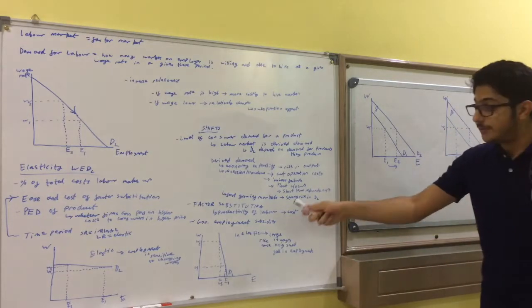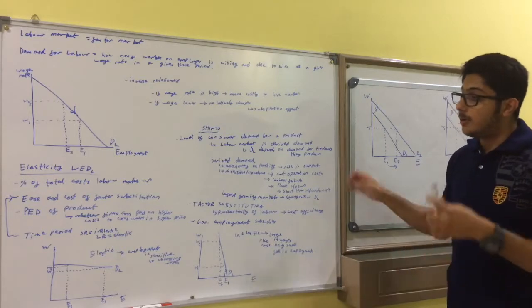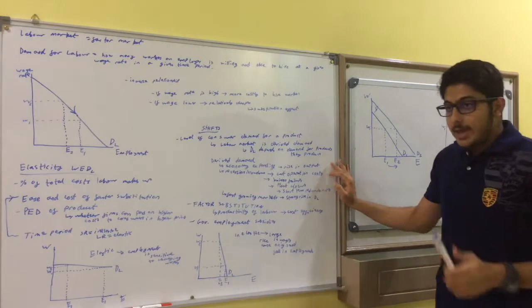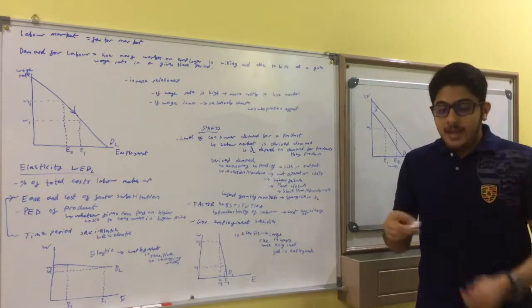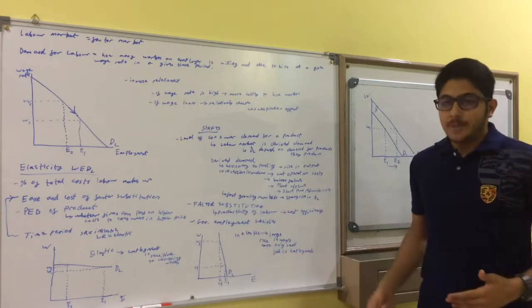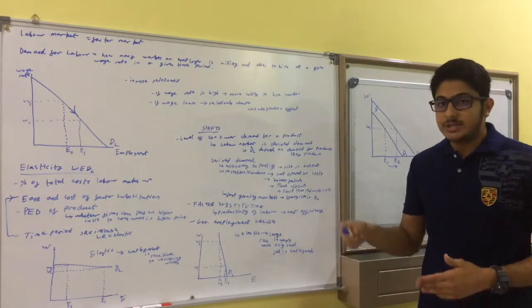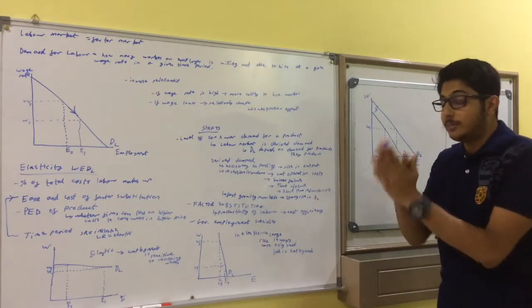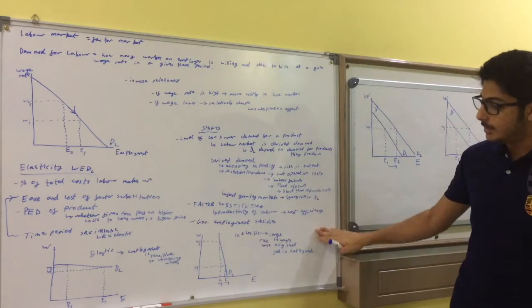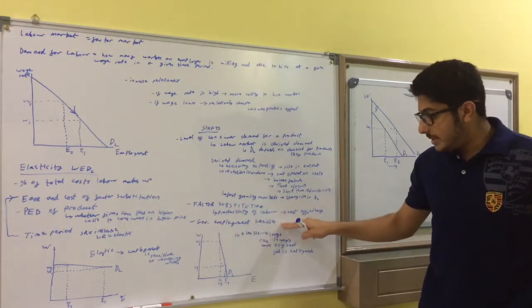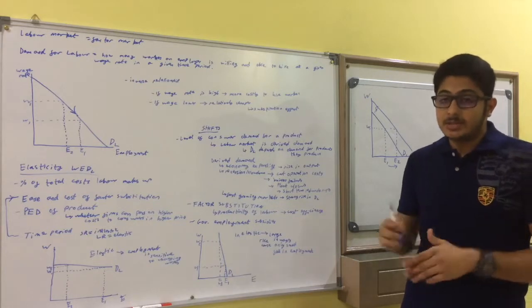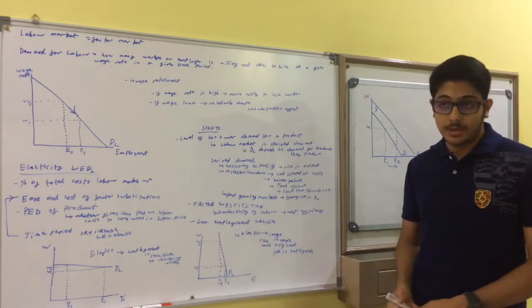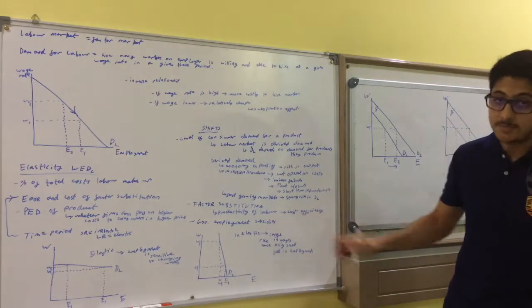Another shifter or determinant of labor demand is factor substitution. If the productivity of labor increases relative to capital, then it's going to be more cost-efficient to use labor instead of capital. So, the demand for labor will increase. Government employment subsidies. If the government gives you subsidies to employ more labor, then you're going to employ more labor because it's not going to cost you anything. The government is paying for it.